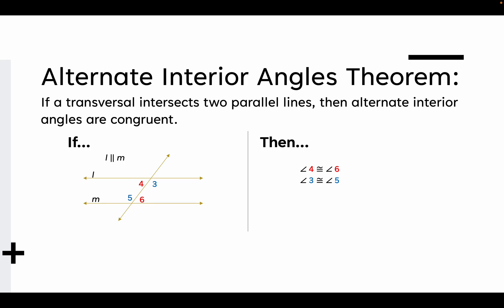Here are a couple more for you. The first one is called the Alternate Interior Angles Theorem. This theorem says that if a transversal intersects two parallel lines — notice I have two parallel lines here and I have a transversal that is intersecting them — then alternate interior angles are congruent. Alternate meaning two angles on either side of the transversal, and interior meaning on the inside of the parallel lines.